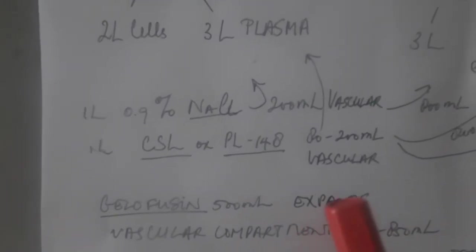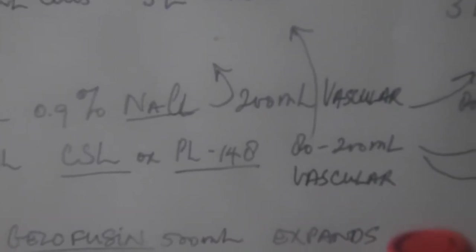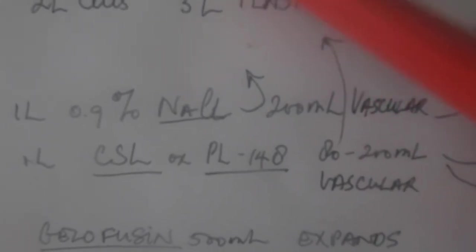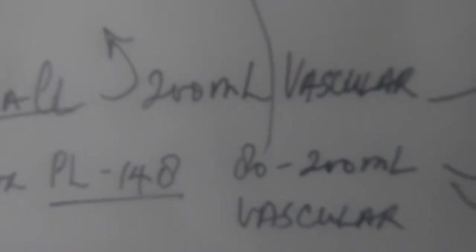Only a certain amount of that liter will actually go and remain intervascularly. So for normal saline that's about 200 mils, but for Plasma-Lyte and Hartmann's that's somewhere between 80 and 200 mils.